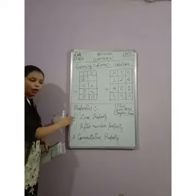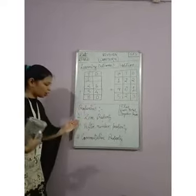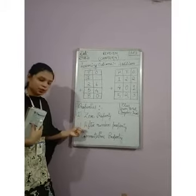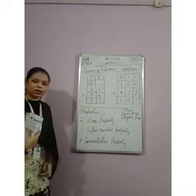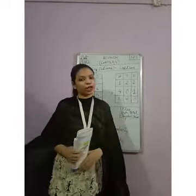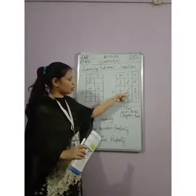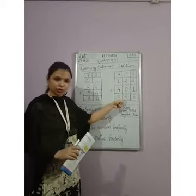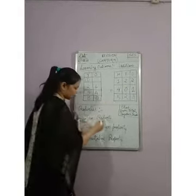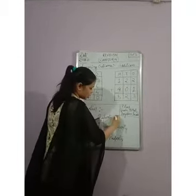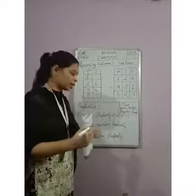Now the next topic is properties of addition. There are three properties. The first is zero property. For zero property: when we add any number with zero, we get the same number as the answer. Two plus zero, we are getting two. That means the number itself is what we get when we add it with zero. I can take another example: 17 plus zero, I will get 17. Any number you add with zero, you get that same number back.